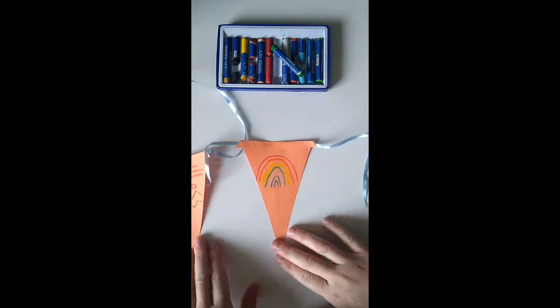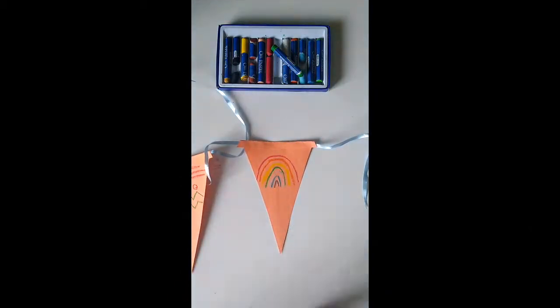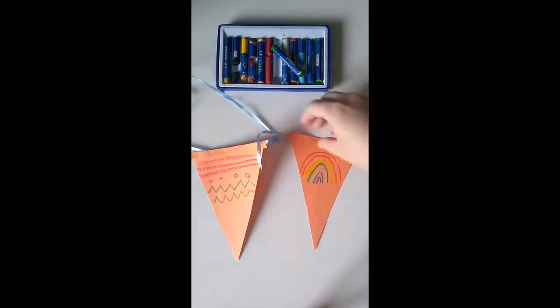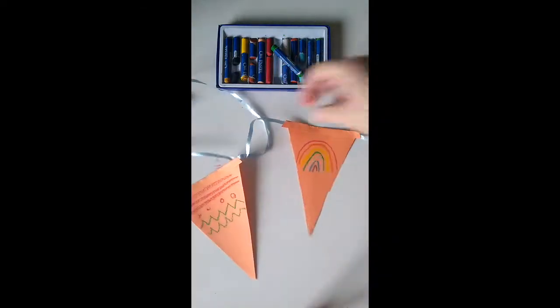And look, this one has rainbows on it, so it starts with red, orange, yellow, green, light blue, dark blue, and purple. So you can really draw anything you want in your circle, you can even do it on both sides and make it even brighter.